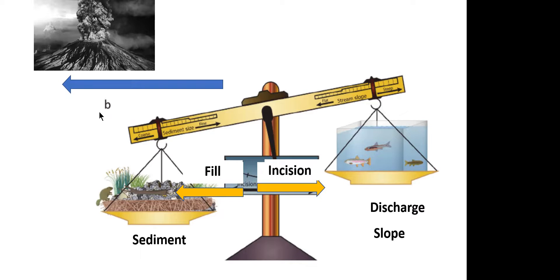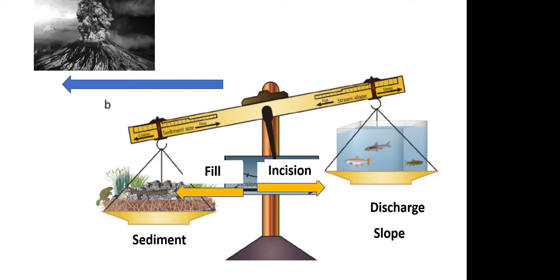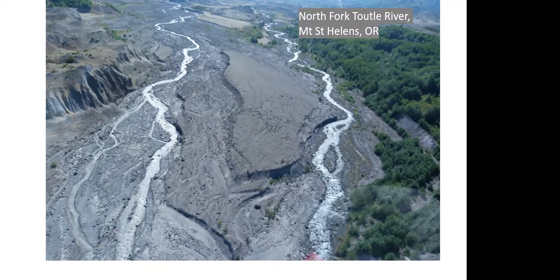For example, the Mount St. Helens eruption in 1980 supplied a massive amount of sediment to the system. The Lane Balance predicts this should cause aggradation and fill — and that is exactly what happened. The North Fork Toutle River, which drains Mount St. Helens, received so much sediment that channels became clogged and turned into braided river systems. This is an excellent example of excess sediment causing a channel to aggrade and change its equilibrium.